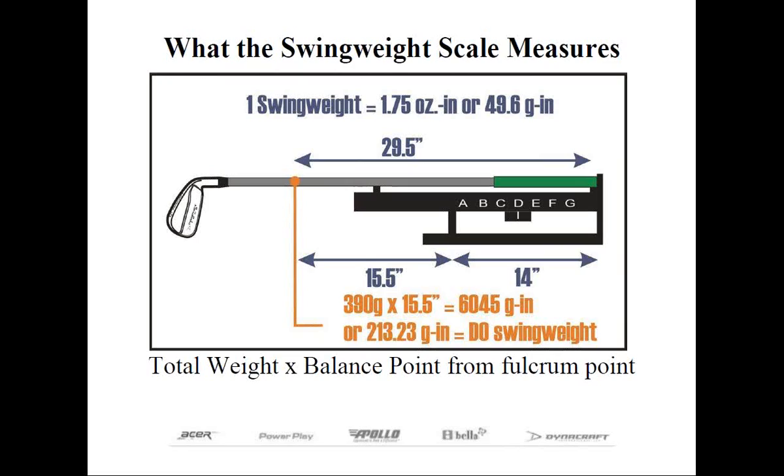In our example, let's say it's 390 grams. We also need to know the balance point of the club, which is 29.5 inches from the end of the grip, or more importantly, 15.5 inches from our fulcrum point. If we multiply the 390 by 15.5, we get 6045 gram inches or 213.23 ounce inches if we convert by dividing 28.35 for the grams per ounce.